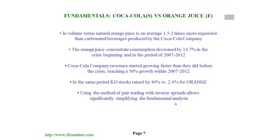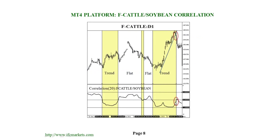Another example: the mixed spread of competitive assets such as stocks of Coca-Cola and futures of frozen orange juice. Natural orange juice is on average 1.5–2 times more expensive than beverages produced by Coca-Cola. Orange consumption decreased by 14% at the beginning of the 2007–2012 crisis, while Coca-Cola revenues grew by 50% in the same period. Coca-Cola stock rose by 46%, whereas orange concentrate futures rose only 2%. After identifying the fundamental hypothesis, we find the optimal market situation where a position on the pair instrument can be opened.